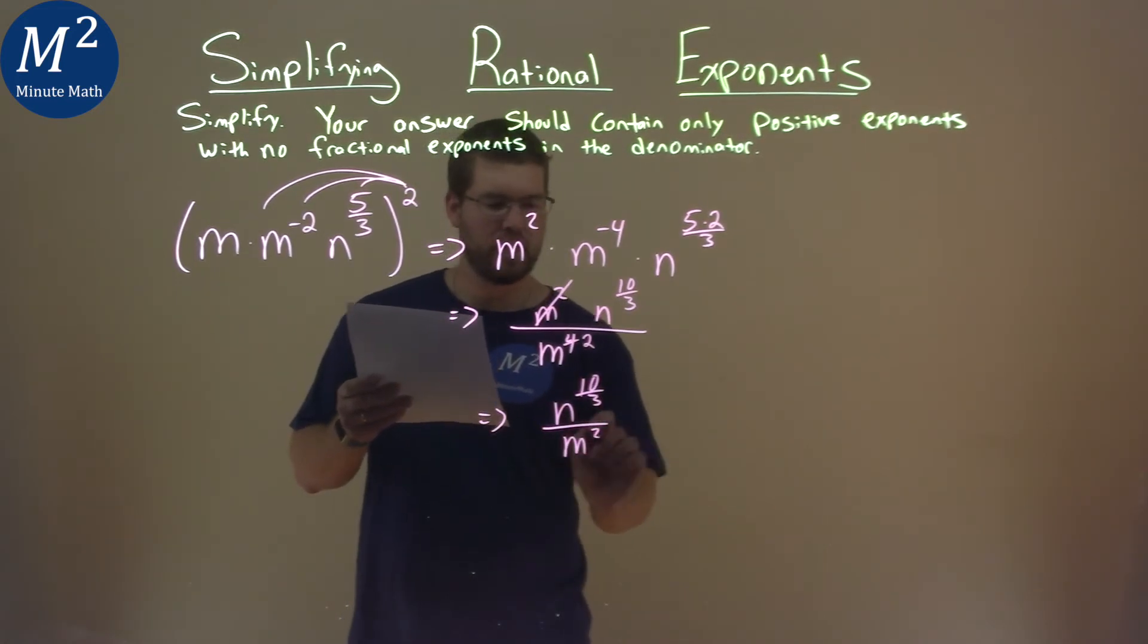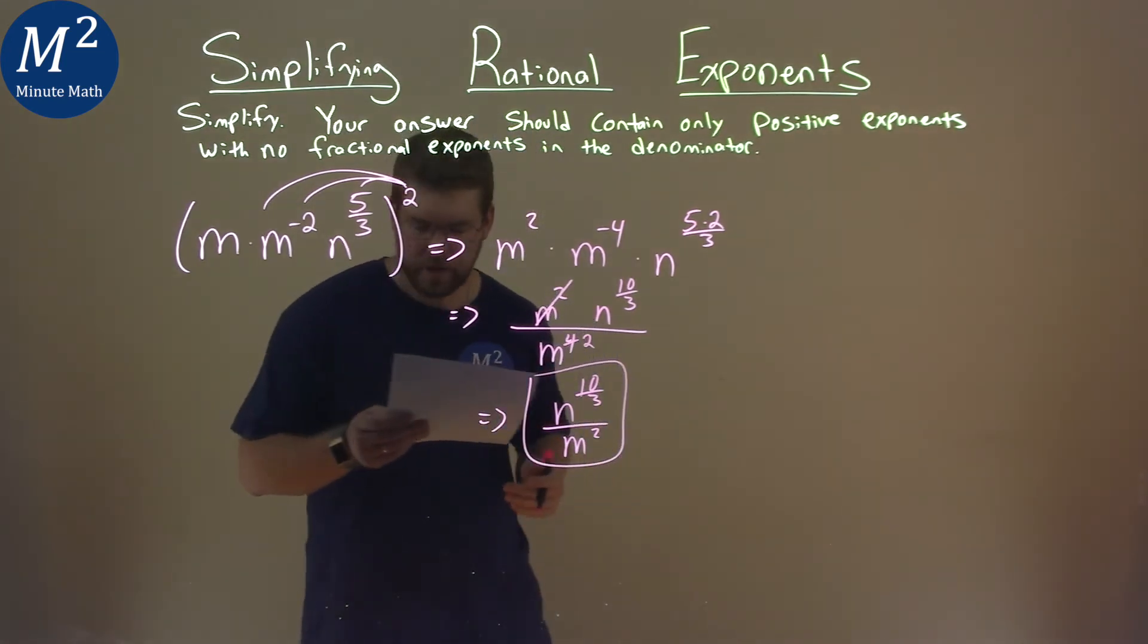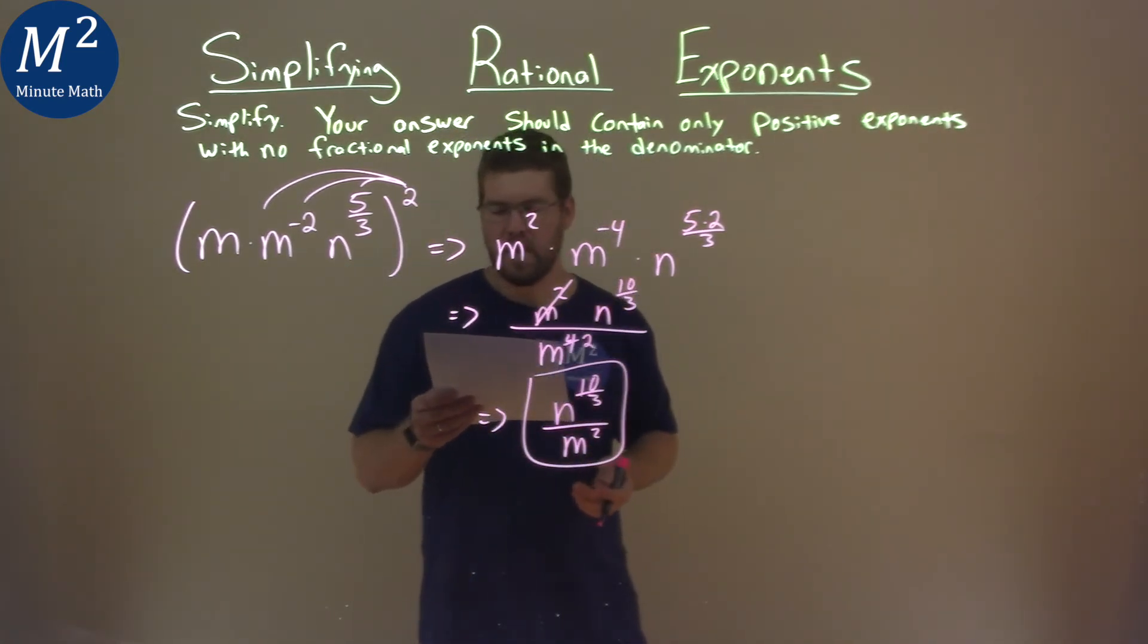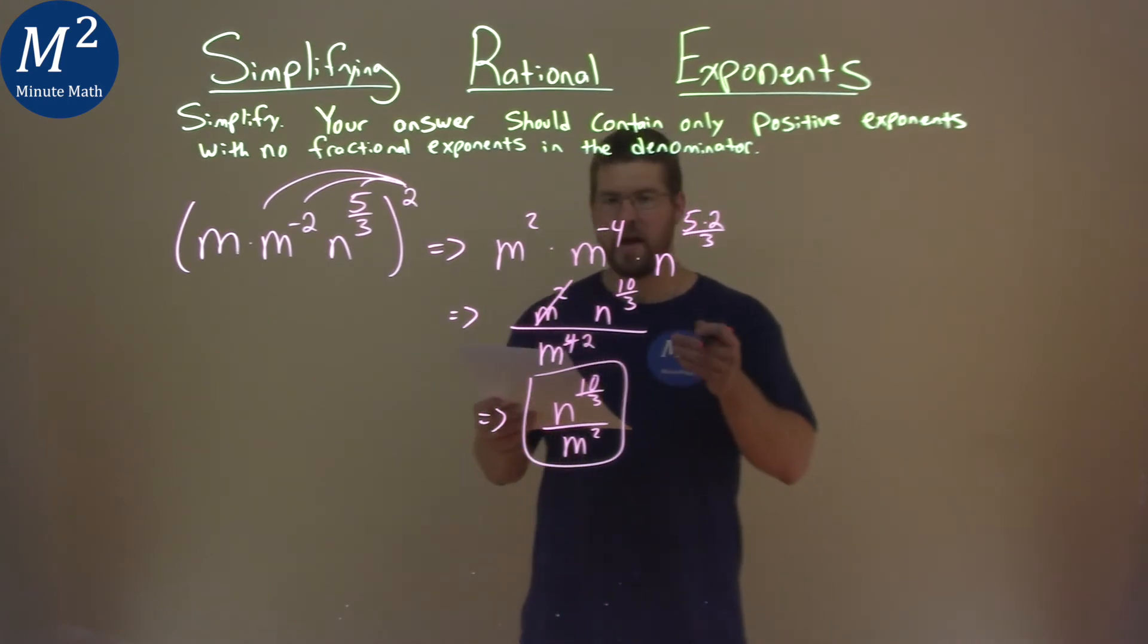m squared in the denominator. And so our final answer here, can't really simplify anymore, is n to the ten-thirds over m squared.